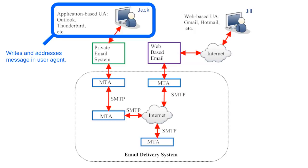Most of us are probably more familiar with web-based user agents attached to web-based email services. Examples of web-based user agents include Gmail, Hotmail, and Yahoo Mail. However, some people prefer private email services that can only be accessed from private user agent applications. Many businesses and workplaces use private systems like these. For private email systems, users must have an email application, like Outlook or Thunderbird, installed on their computer in order to access their private emails.